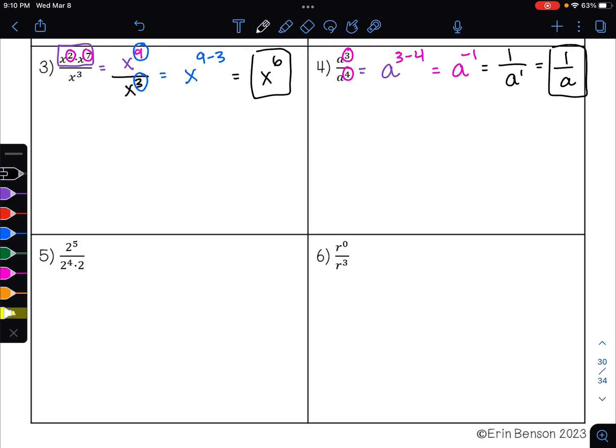If we look at example 5, I have like bases. Let's go ahead and begin by simplifying our denominator. Here my base is 2. And I am multiplying like bases in my denominator. So I need to add my exponents. This 2 has an invisible exponent of 1. So I'm going to have 4 plus 1, which is 5. My numerator is going to stay the same.